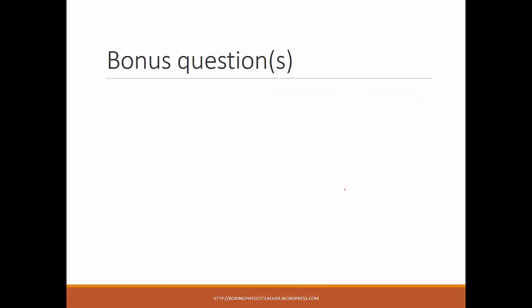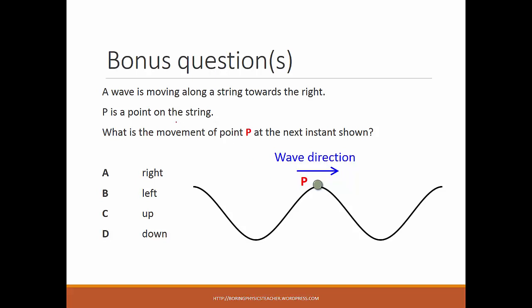Now, some bonus questions. The wave is moving along the string towards the right — that is the wave direction — and point P is a point on the string, and it is at the peak. The question typically asked is: what is the movement of P at the next instant? Will it move right, left, up, or down?